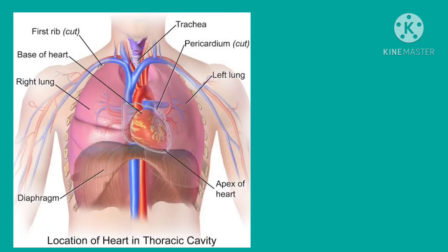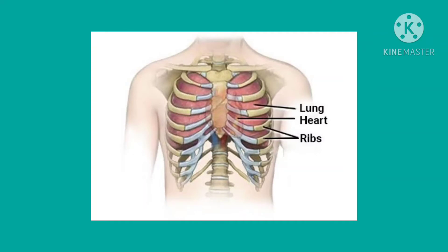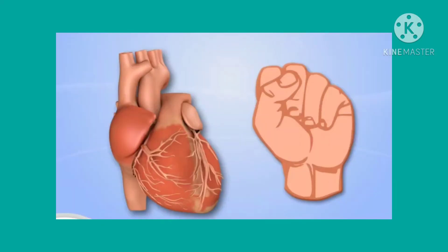Let us understand its structure. The heart is located between the lungs in the chest cavity with its lower tip slightly tilted towards the left. The size of our heart is roughly equal to our fist, about 12 cm in length and 9 cm in breadth.